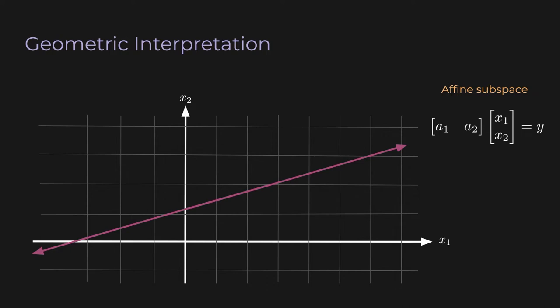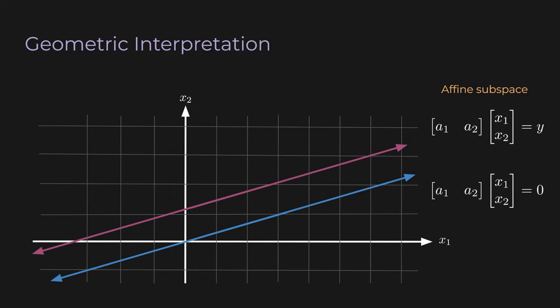Let's look at a different problem: Ax equals 0. I have the same matrix A but replaced y with the zero vector, plotted here as a blue line. This blue line represents the infinitely many x1, x2's that satisfy Ax equals 0. This is actually a subspace — or a linear subspace — which satisfies the requirements of being closed under scalar multiplication and vector addition. One important thing: linear subspaces always include the zero vector, whereas affine subspaces never include the zero vector. If you take a linear subspace and translate it by a vector, you get an affine subspace.